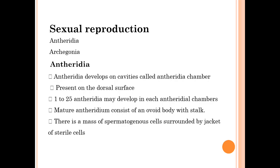Sexual reproduction occurs in Anthoceros with the help of two gametes: antheridia and archegonia. Antheridia is the male reproductive structure. Antheridia develop in cavities called antheridial chambers, present on the dorsal surface. Each chamber may contain 1 to 25 antheridia. A mature antheridium consists of an outer body with a mass of spermatogenous cells surrounded by a jacket of sterile cells.